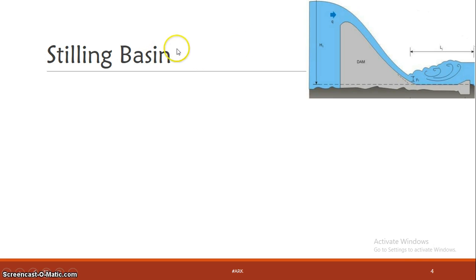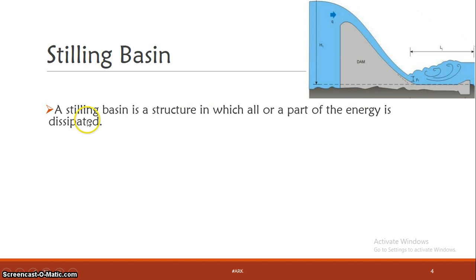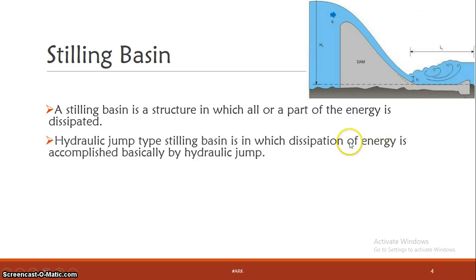The stilling basin is the downstream portion of the energy dissipation structure. It is a basin-like structure in which all or part of the energy is dissipated. We are going to study the hydraulic jump type of stilling basin, where the hydraulic jump form results in energy dissipation.